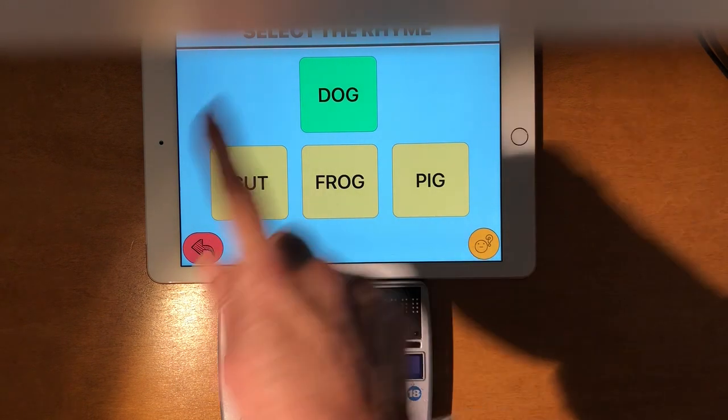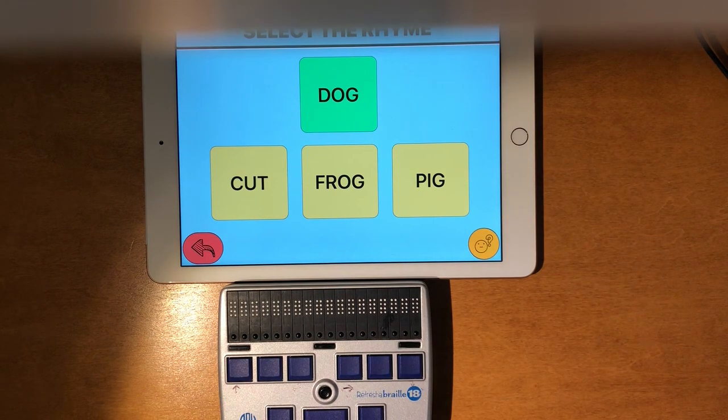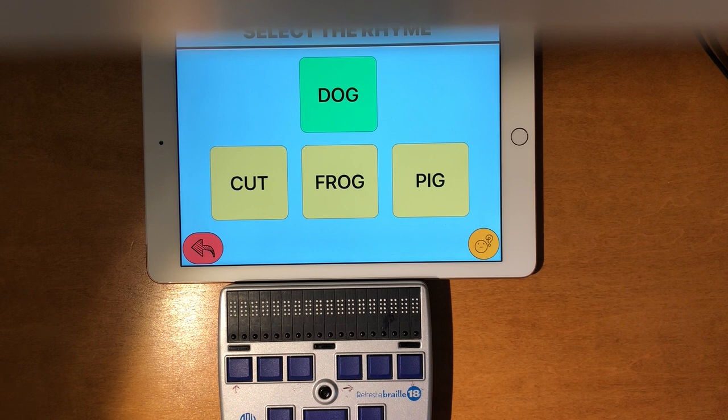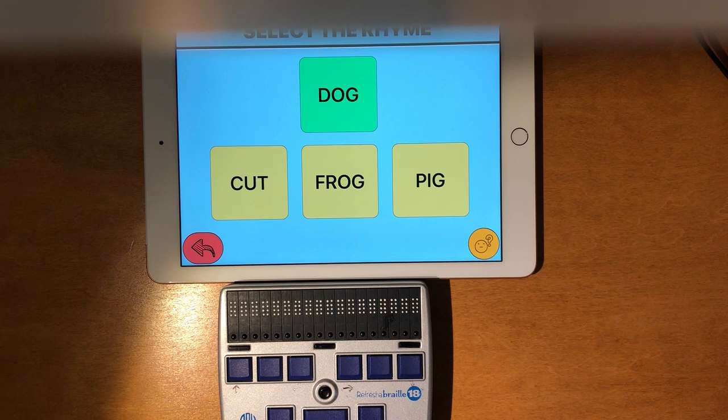So the screen layout, this again is where it's important. You want to know the layout so you know how to move. I encourage the student to drag and figure out the layout. So we have the directions at the top and the next row in the very center is our word dog in this case. And below that box are three boxes with options.